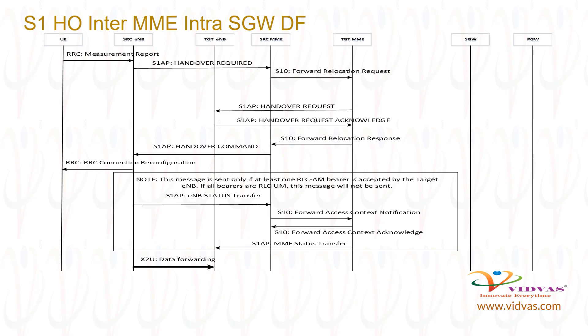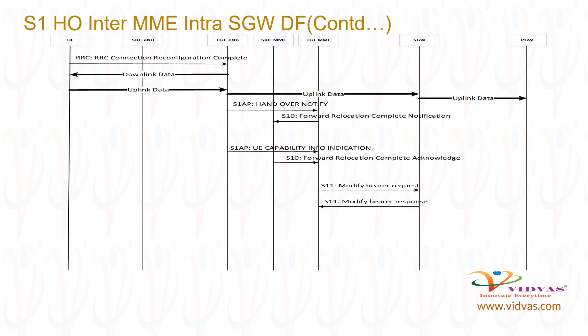Target ENB may buffer the data received from source ENB until it receives RRC connection reconfiguration complete message from the UE. After receiving RRC connection reconfiguration complete from UE, target ENB forwards buffered downlink data to UE, and forwards buffered uplink data to internet via SGW and PGW.